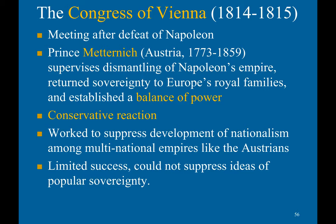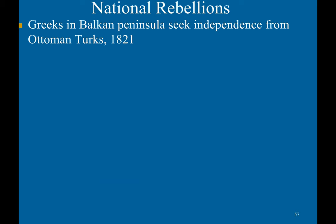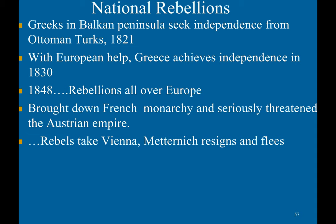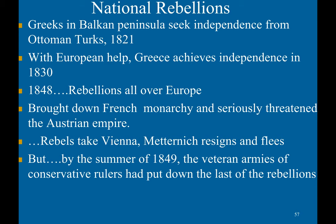There were national rebellions, with the Greeks and peoples of the Balkan Peninsula seeking independence from the Ottoman Turks in 1821. With European help, Greece achieved independence in 1830. In 1848, rebellions swept all over Europe, bringing down the French monarchy and seriously threatening the Austrian empire, with rebels taking Vienna and Metternich resigning and fleeing. But by the summer of 1849, the veteran armies of conservative rulers had put down the last of the rebellions — basically a pattern of concession and then repression.